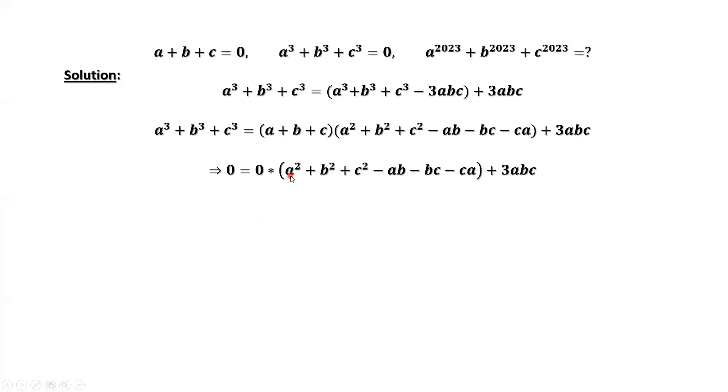This implies 3abc equals 0. The product of A, B, C equals 0. This means at least one of A, B, or C is 0.